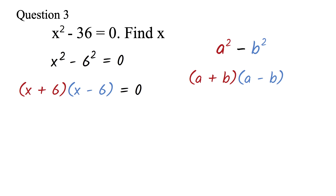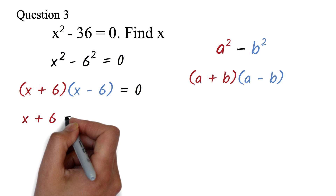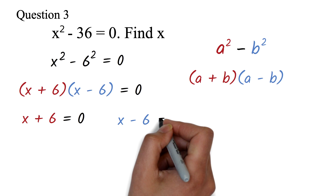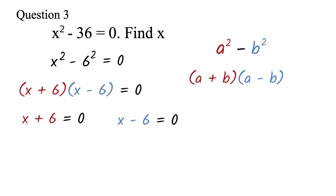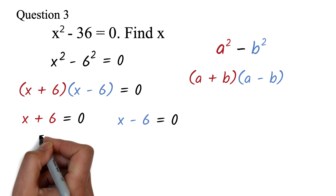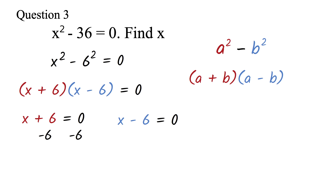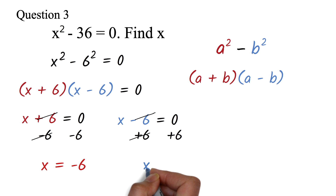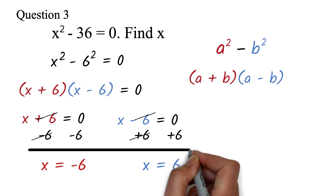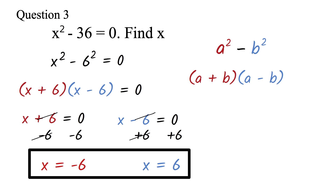We use the difference of two squares to factor: x plus 6 times x minus 6 equals 0. For this equation to equal 0, either x plus 6 equals 0 or x minus 6 equals 0. Subtracting 6 from both sides gives x equals negative 6. Adding 6 to the other equation gives x equals 6. Our answers are x equals negative 6 or x equals 6.